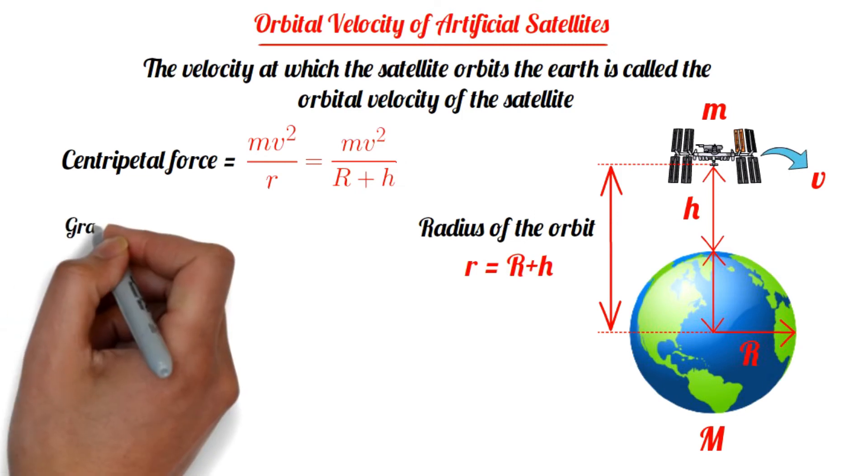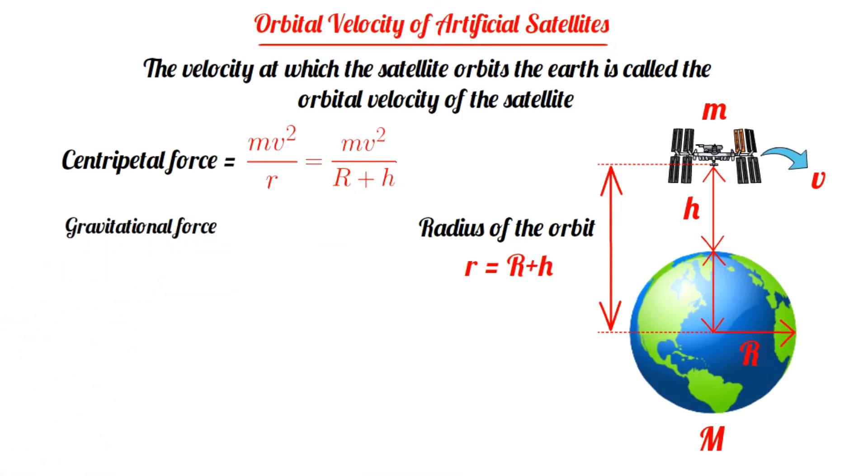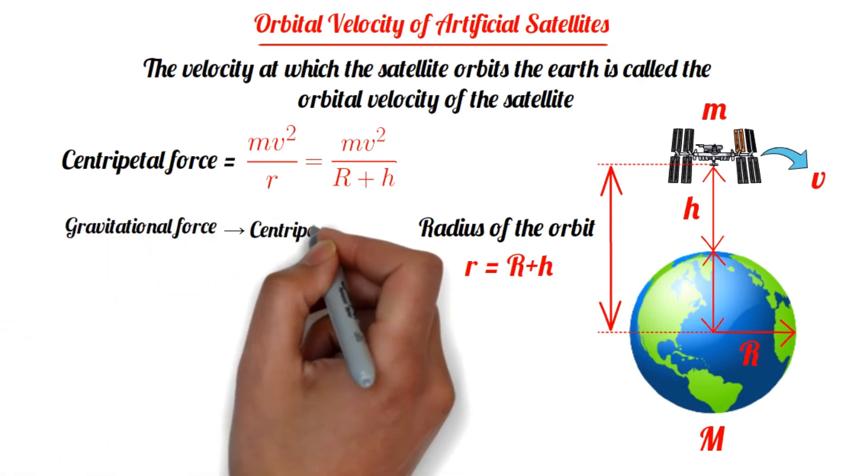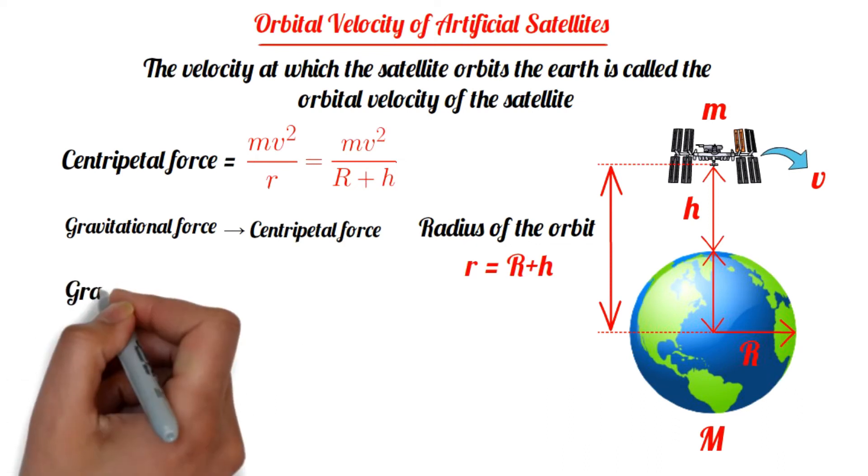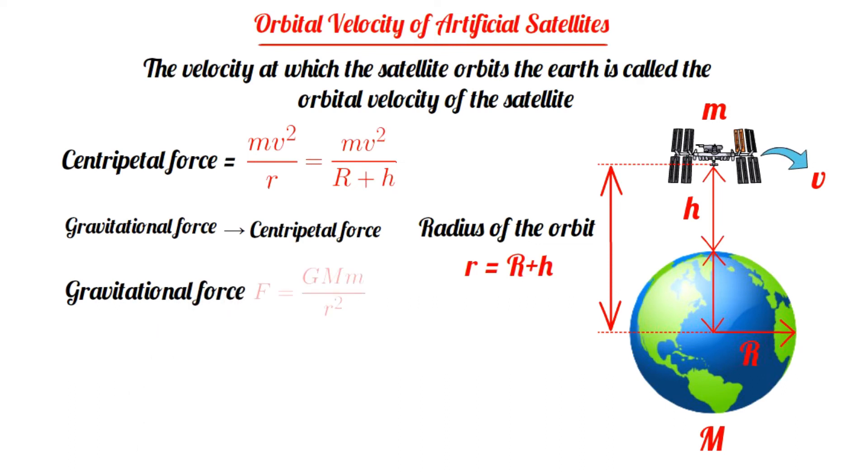In fact, the gravitational force between Earth and satellite provides this centripetal force for orbiting the Earth. From Newton's law of gravitation, we know gravitational force F equals GMm by r squared. Therefore, m v squared by r equals GMm by r squared.